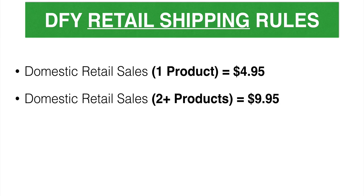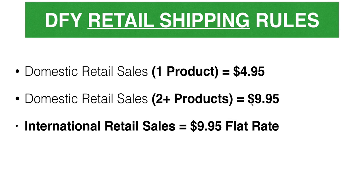Now, if we have an international customer come in from London, Australia, Canada, or wherever it may be, we charge them a separate international rate of $9.95. That means if they buy one product, they're still going to get charged $9.95 for shipping and handling. The logic behind that is shipping an item internationally generally costs a little bit more. You can edit that, but that's what I have already set up — and what I've been doing on my store for a long time.